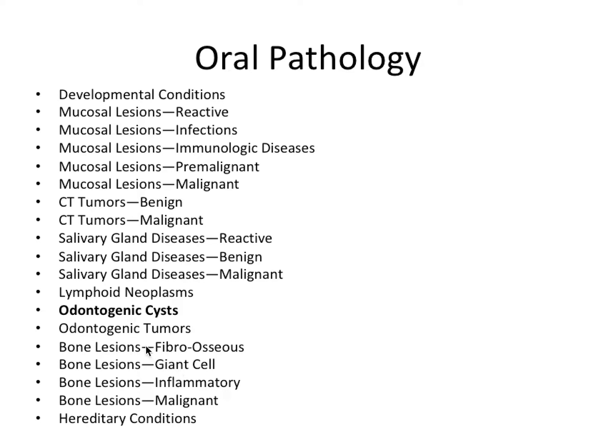Odontogenic cysts are derived from cells associated with tooth formation. 'Odonto' refers to tooth, and 'genic' refers to formation. Residual odontogenic epithelium can undergo this cystification process at any time, and except for a few, the stimulus for cystic change is kind of unknown. Cysts, by definition, are cavities lined by an epithelium, and that's super important as we'll see when we talk about each of these odontogenic cysts.